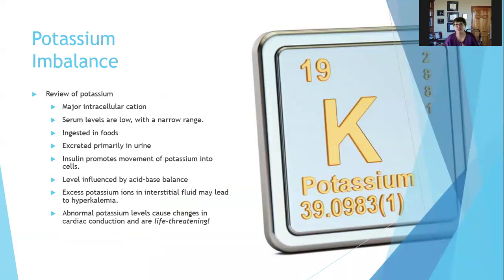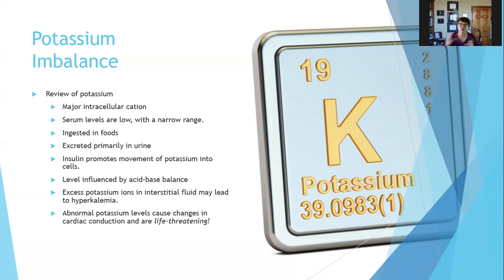Potassium is the major intracellular cation — low in the blood serum and high within the cells — and it must stay within a narrow range. Potassium is ingested in foods and excreted primarily in the urine, like sodium. Insulin promotes movement of potassium into cells, just as it promotes movement of glucose into cells. The sodium-potassium pump actively moves two sodiums out and one potassium in for every molecule of ATP used. Excess potassium ions in the interstitial fluid can lead to hyperkalemia.